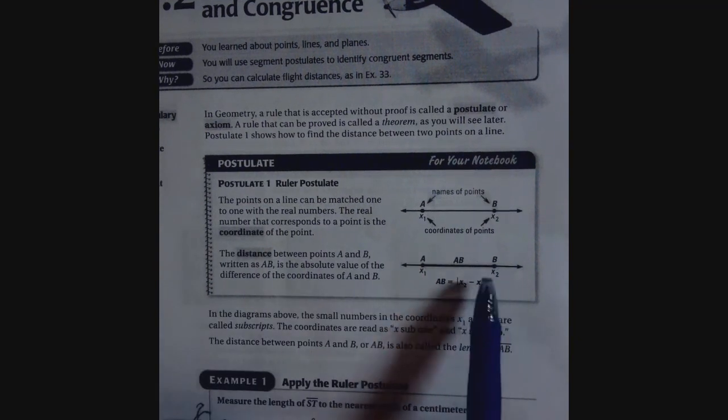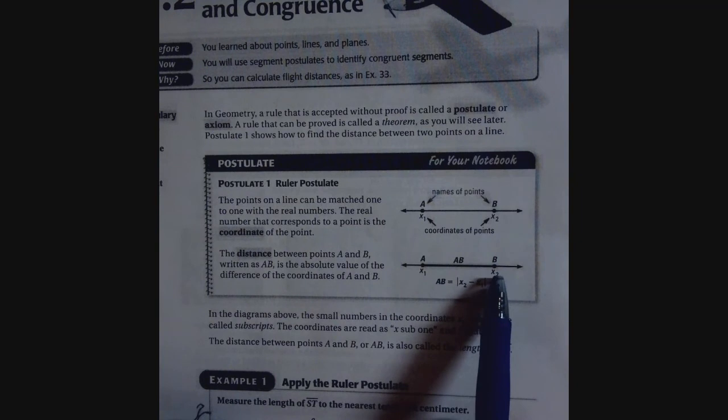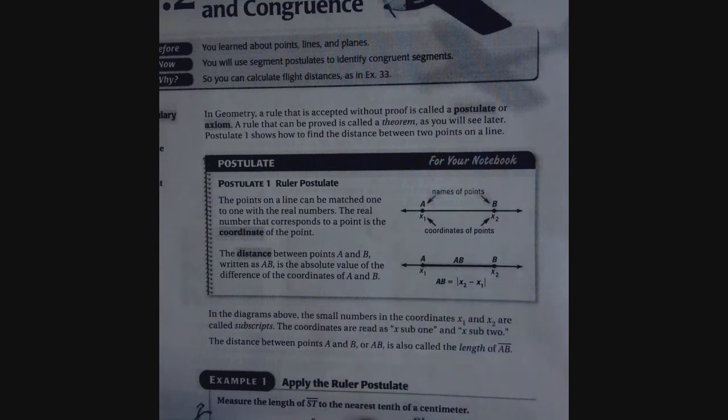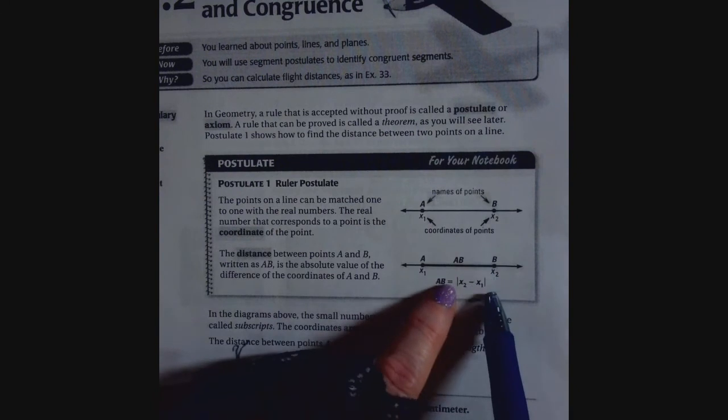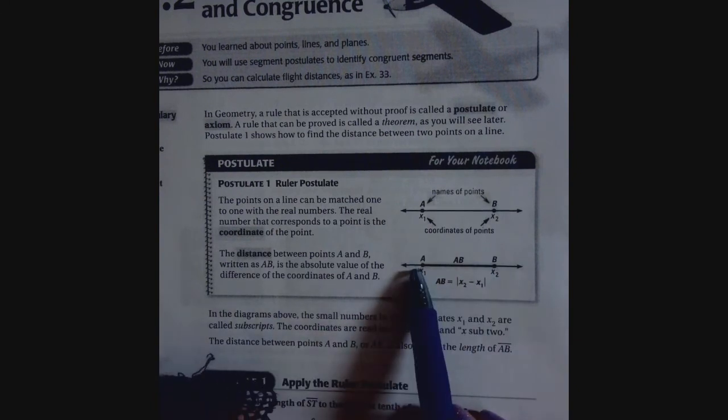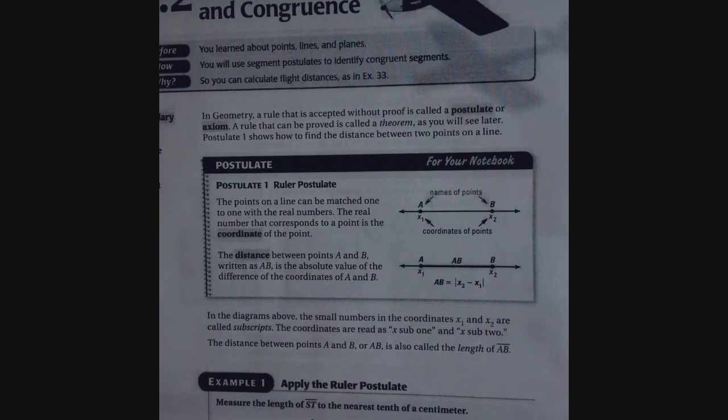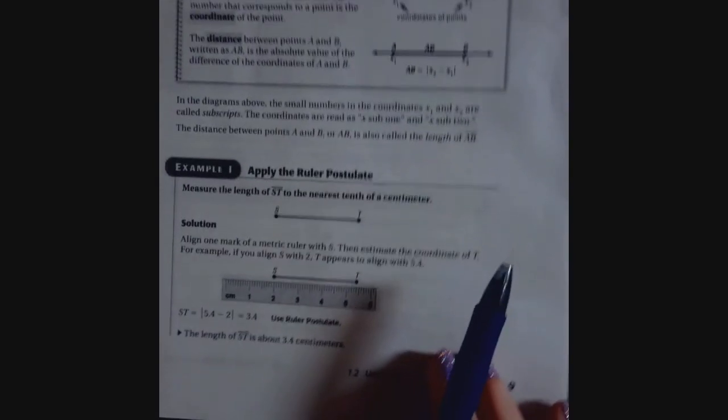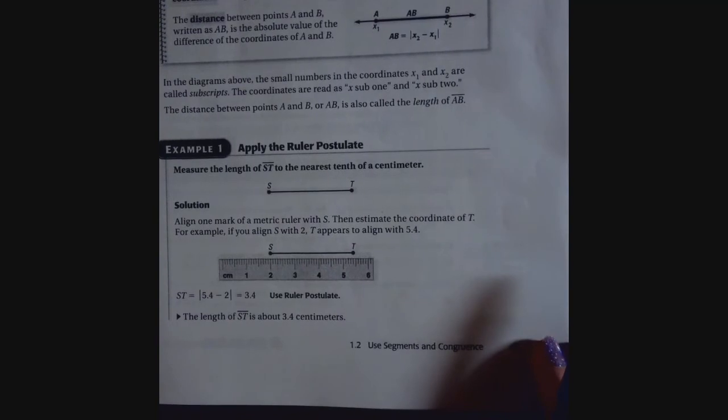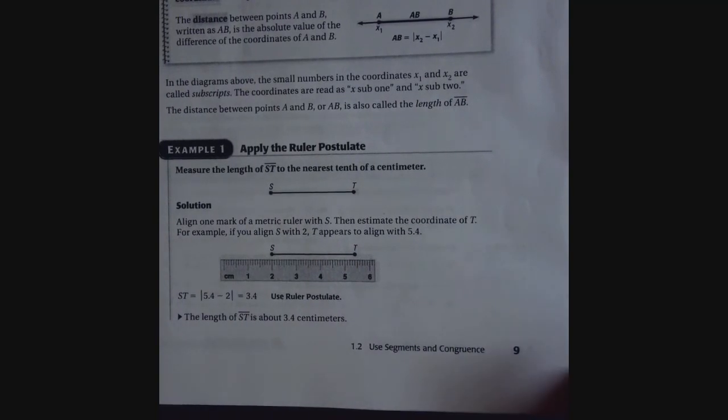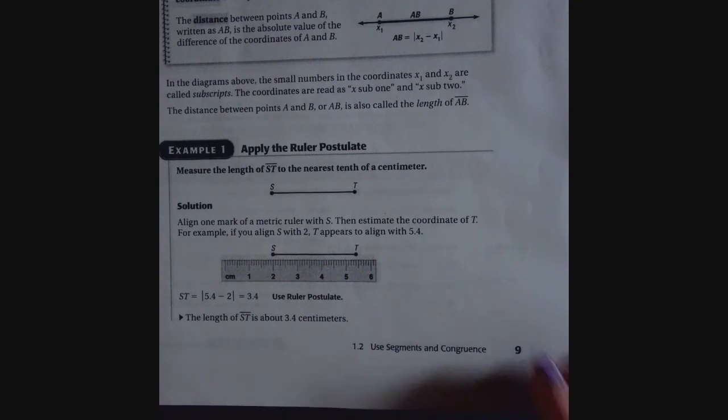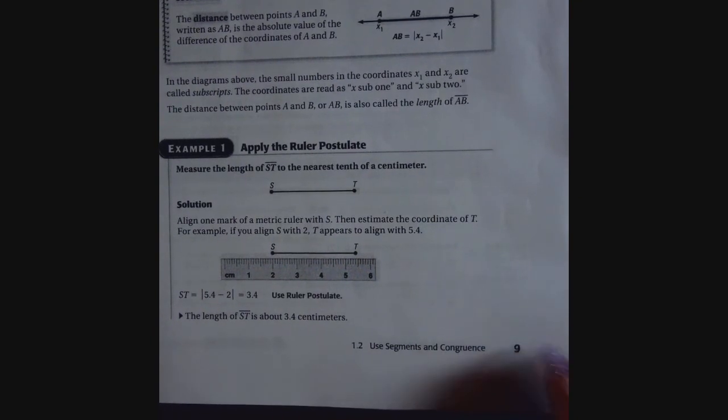So the absolute value is always positive because it's distance. So basically you're finding the difference between B and A. And they put absolute values on just because if you're at negative numbers, your distance can never be negative. Distance is always going to be positive. So let's go ahead and show. It's not difficult at all, 1.2. But it's called the ruler postulate, and you just have to know what these things mean.